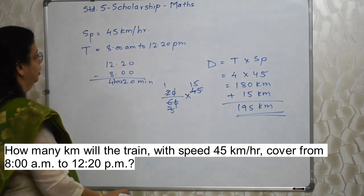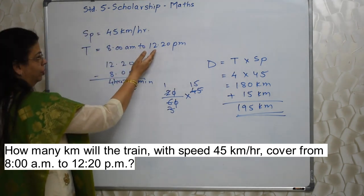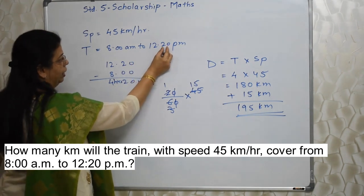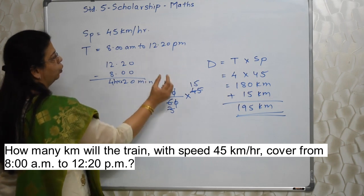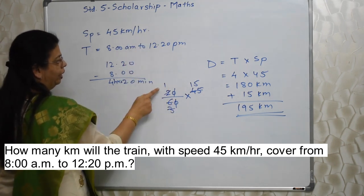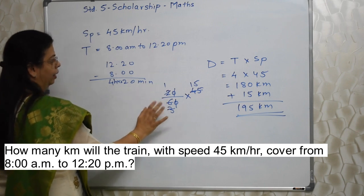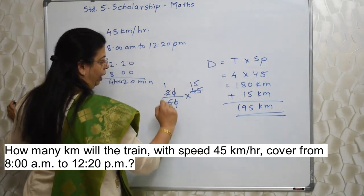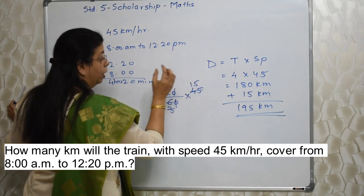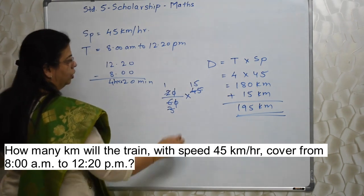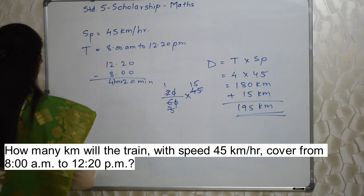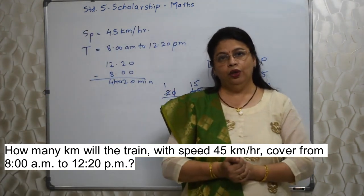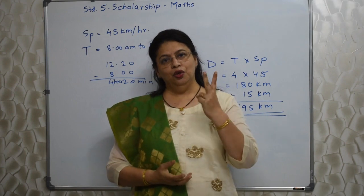Very, very easy students. If this would have been 8 to 12, it was a very simple sum — 4 into 45 and 180 would have been our answer. Here we are concerned because of this 20 minutes. Don't be afraid of that 20 minutes — just convert that into hours by dividing by 60. Let it be like that, then use the formula: time we have got — 20 upon 60 — multiply by speed 45, do the calculation, you will get 15 kilometers. Added to that earlier 180, our answer is 195 kilometers. See — one simple formula: distance is equal to time into speed. Two marks in the pocket!